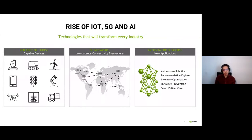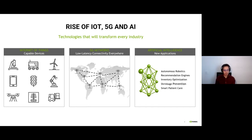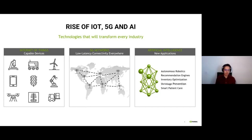Before jumping into the solution, we need to understand why we are witnessing this revolution in edge AI. The answer is that edge AI stands on top of three main pillars. The first one that leads to this revolution is the Internet of Things. Right now, a lot of devices, sensors, and compute units are connected to the internet — and by a lot, we mean billions and billions of devices.